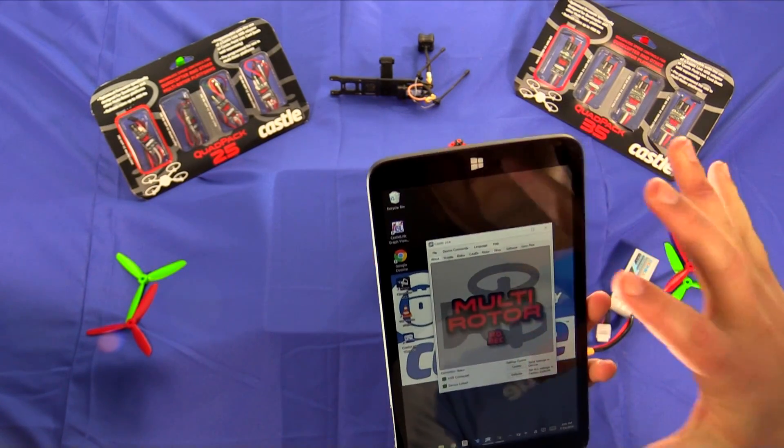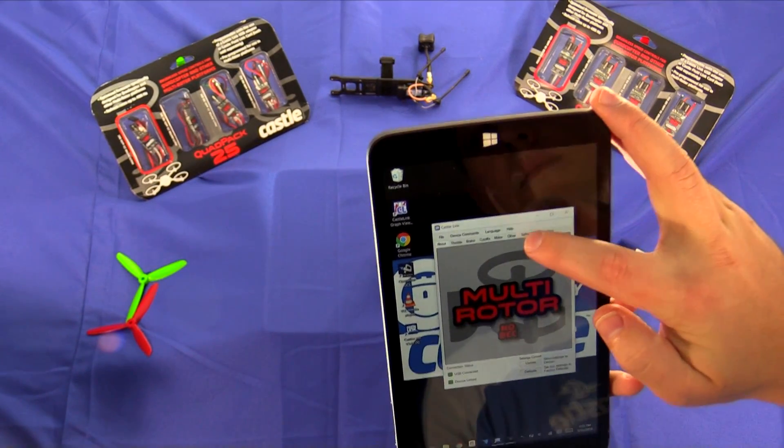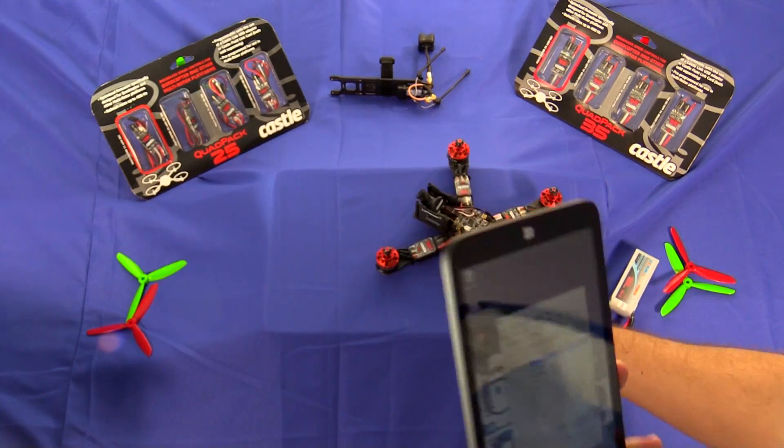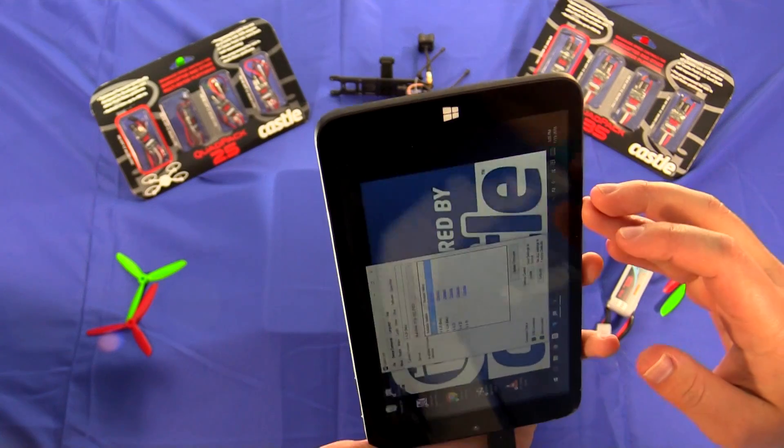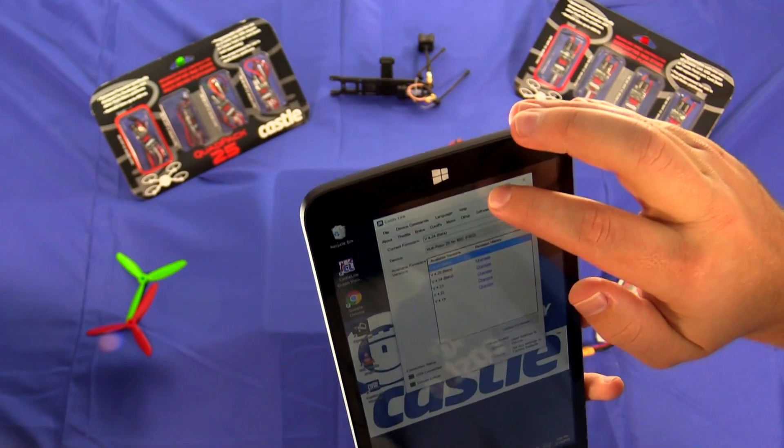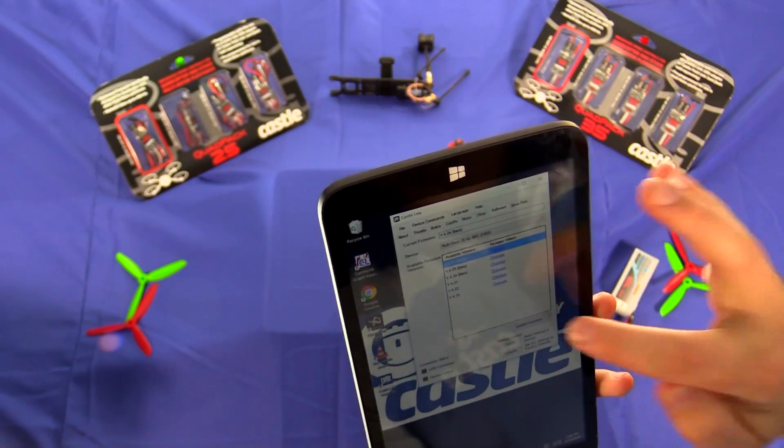So I've already downloaded the newest Castle link, you can download that from our website castlecreations.com. I've plugged in my controller through the receiver wire and now I'm going to go to the software tab and click update to 5.0.